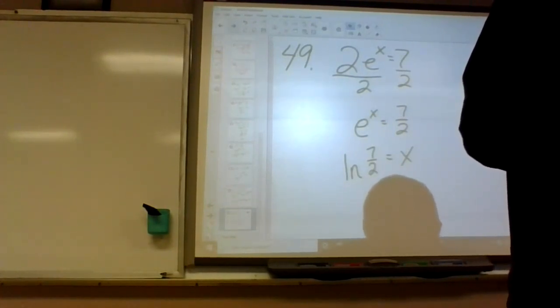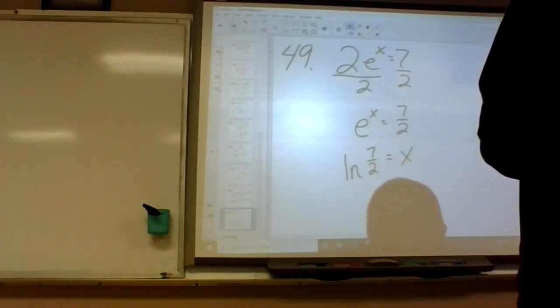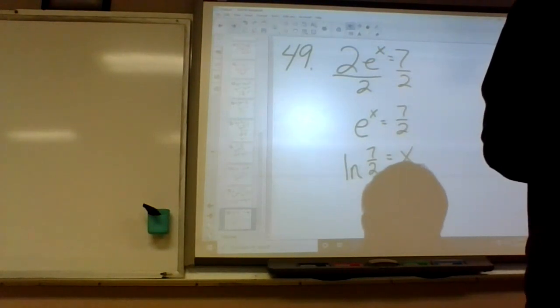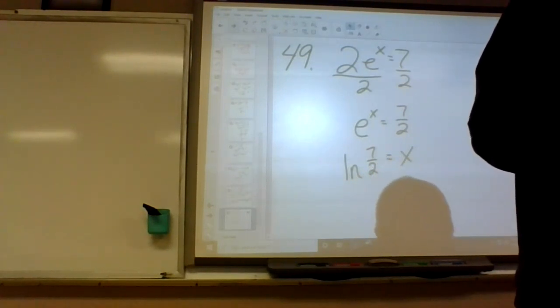On number 44, just change it to a log function right off the bat. And then what's the next decision? Well, you get log base 3 of 32 equals x plus 9. So you've got to figure out what log base 3 of 32 is and then subtract 9.